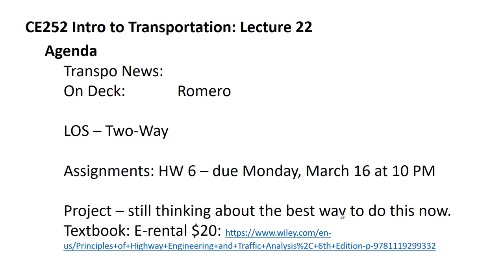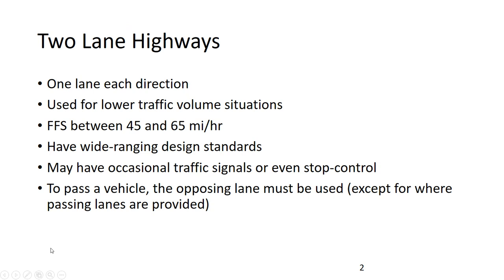Let's move on for today's lecture. So we're doing two-lane highways — one lane each direction. This is generally lower traffic volumes. The freeways and multi-lane highways were for high traffic volumes. These have a free flow speed of between 45 and 65 miles per hour with lots of design standards.